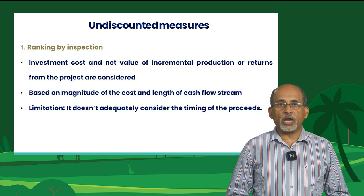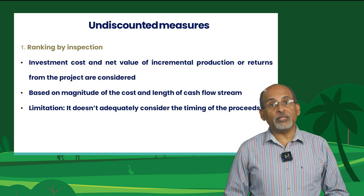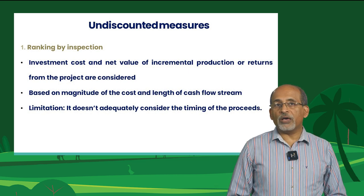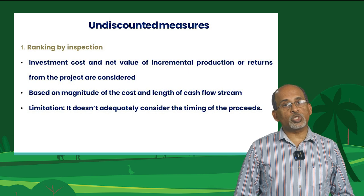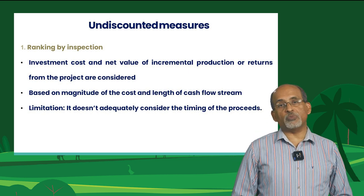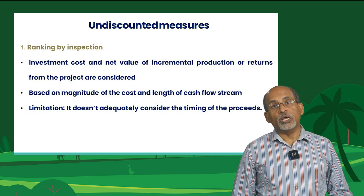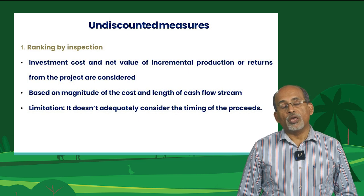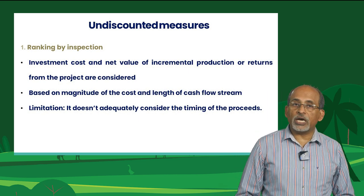The first undiscounted measure is ranking by inspection. We can decide on whether a project should be accepted over another by looking at the investment cost and the net value of incremental production or returns. With the same investment, two projects may produce the same net returns for a period but one continues to earn longer than the other; or for the same investment, the total net returns may be the same but one project has more of the flow earlier in the time sequence. The major limitation of ranking by inspection is that it doesn't adequately consider the timing of the proceeds.